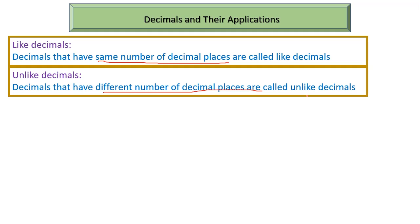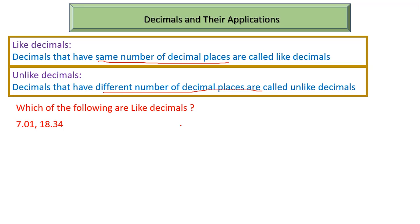In this video I am also going to teach you how to identify like and unlike decimals. So let's take a problem: which of the following are like decimals — 7.01 and 18.34? To identify like decimals, first find the number of decimal places. If the decimal places are the same, we will call those two decimal numbers like decimals.